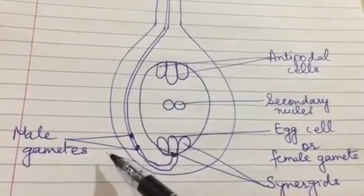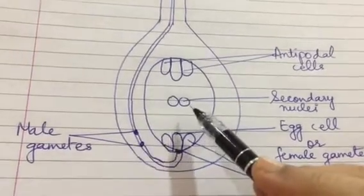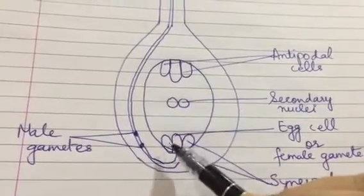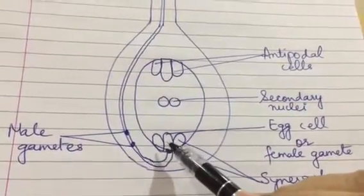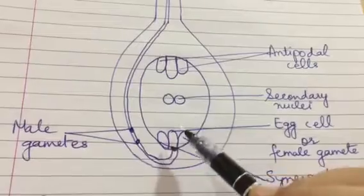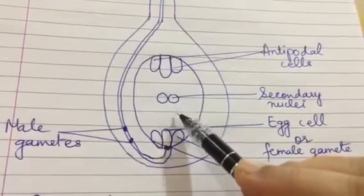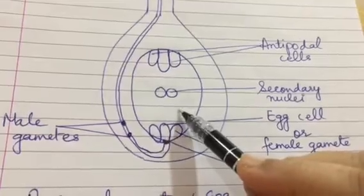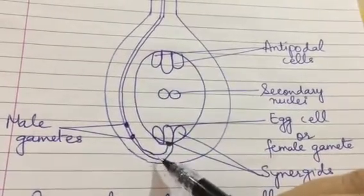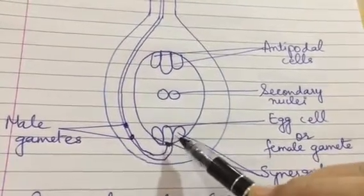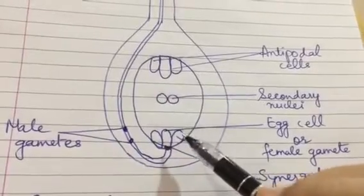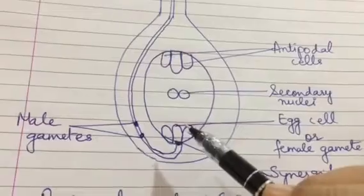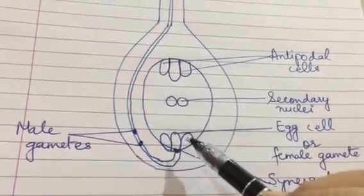The second male gamete would fuse with the secondary nuclei to form the primary endosperm nucleus. Now the zygote is the future plant and the primary endosperm nucleus would divide and re-divide to form the endosperm. So zygote would further get converted into the plantlet but endosperm would give its food and nourishment till the seed germinates.